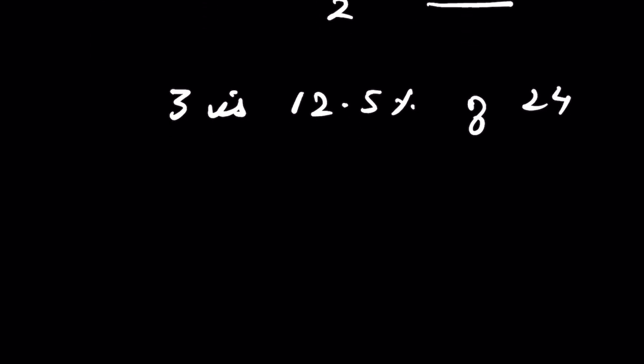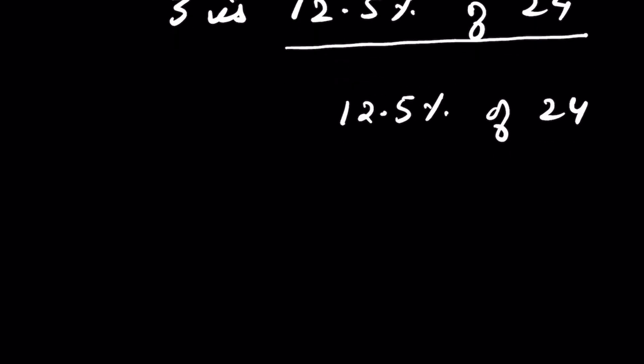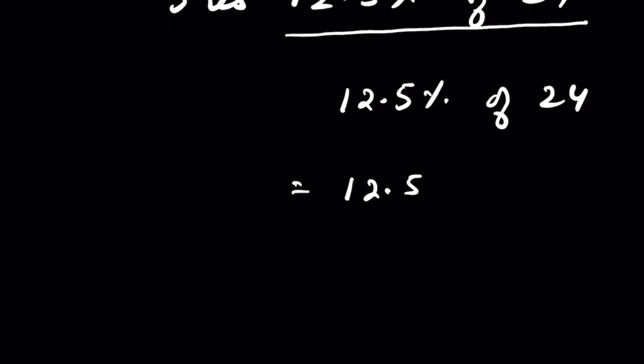You can check this. Calculate 12.5 percent of 24. How to calculate this? 12.5 percent means 12.5 over 100 times 24. Now you remove this decimal and put a zero here because there is one digit after decimal.